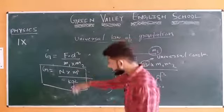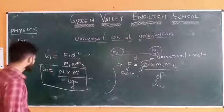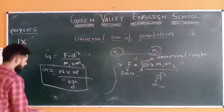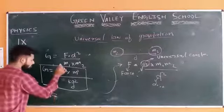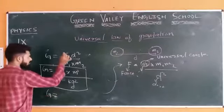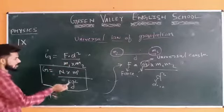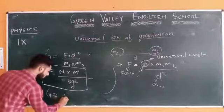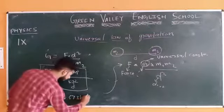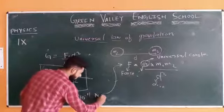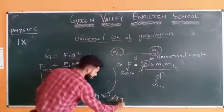G also has a specific value. If you put in the values — using the mass of the Earth — you will get the value of G equals 6.67 times 10 to the power of minus 11 Newton meter squared per kg squared.